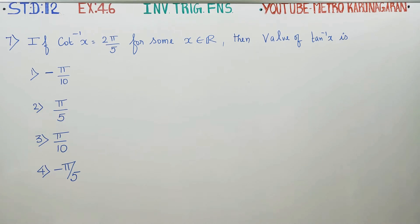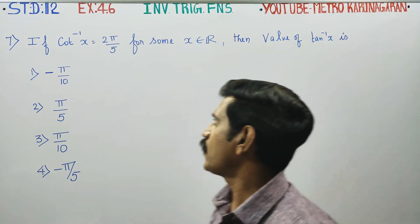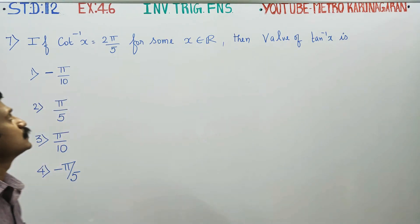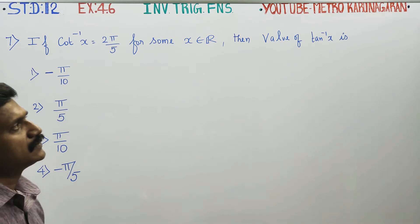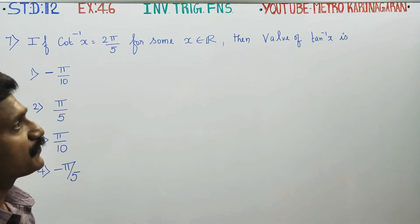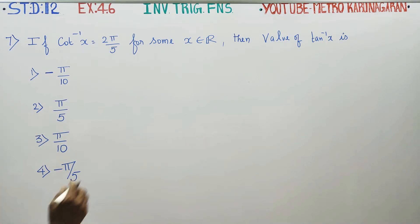Dear 12th standard students, in exercise number 4.6, sum number 7: If cot inverse of X is equal to 2π/5 for some X belonging to real numbers, then find the value of tan inverse of X.